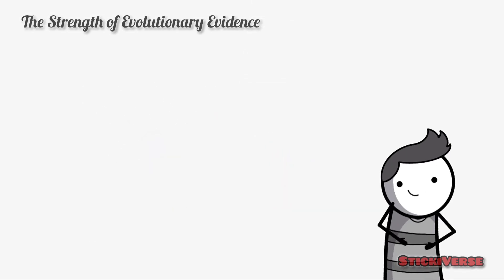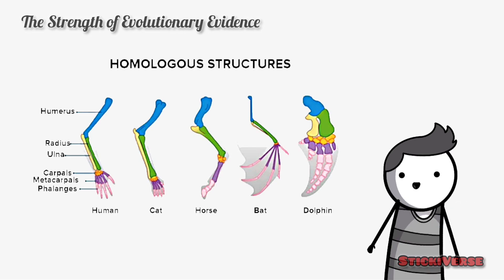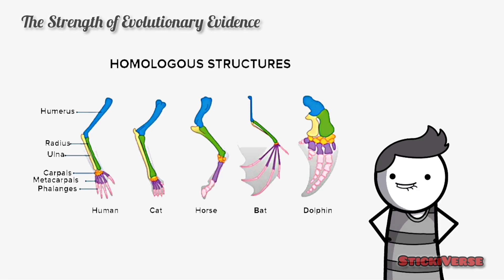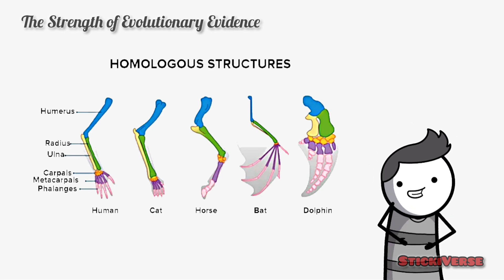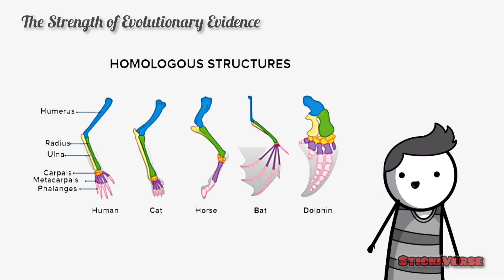Third, comparative anatomy. By comparing the body structures of different species, we can see features that point to shared evolutionary ancestors. For example, the bones in the forelimbs of humans, whales, bats, and birds are strikingly similar, even though the species use them for different purposes.